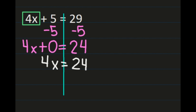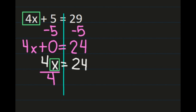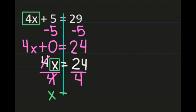Now we have 4x equals 24, which is a one-step equation. Boxing the x shows what we're isolating. We have 4 times x, so we need to divide by 4 to get x by itself. If I divide the left-hand side by 4, I need to divide the right-hand side by 4 as well. The 4s simplify out, leaving x equals 24 divided by 4, which is 6. So x equals 6.